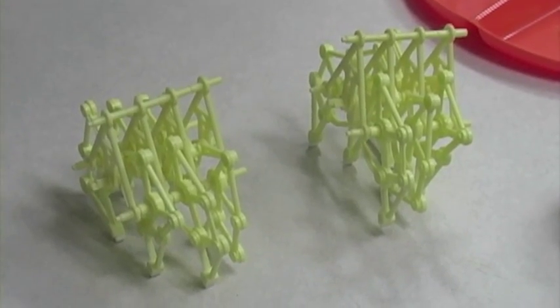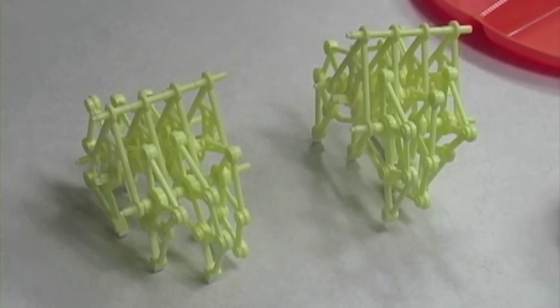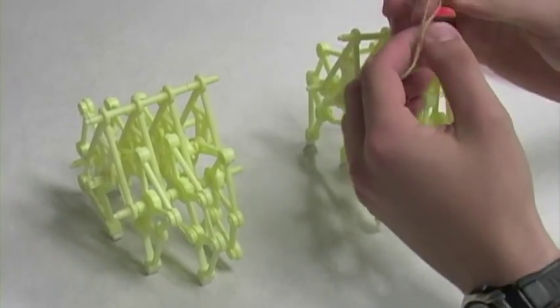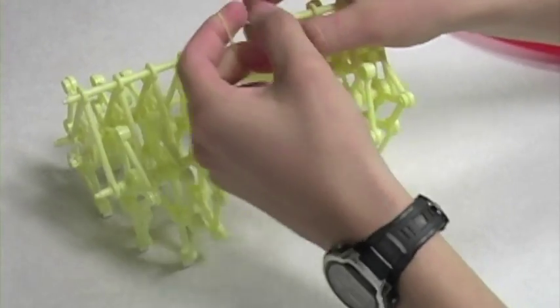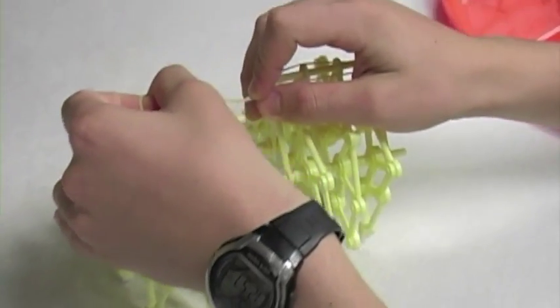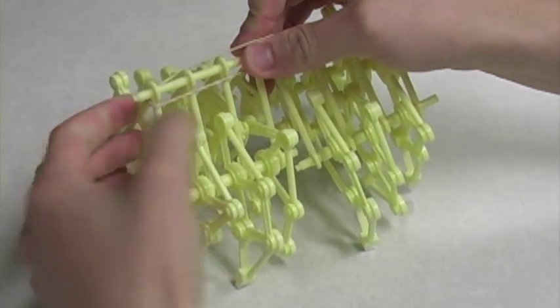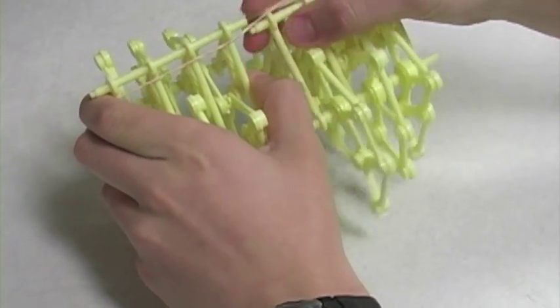Before attaching, fold the rubber band into two loops, and then attach the rubber band so that it looks like this.